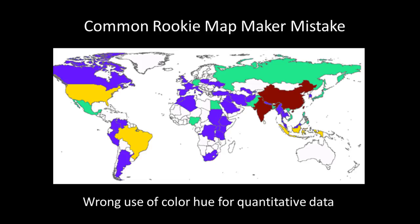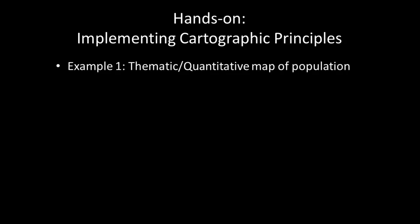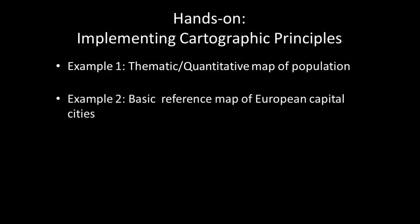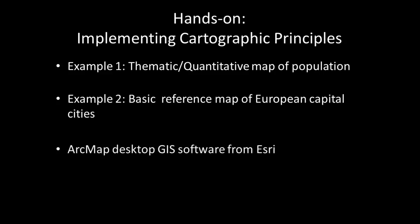In the next part of this lesson, I'll give a hands-on practical demonstration of applying cartographic design concepts using ArcGIS software. I'll show two examples: first, a thematic or quantitative data map of population counts in U.S. counties; and second, a basic reference map of European capital cities. In both examples I will draw upon the ideas from the lecture portion. The cartographic ideas are software agnostic, and I encourage you to consider them in whatever mapmaking software package you use.